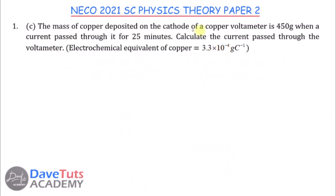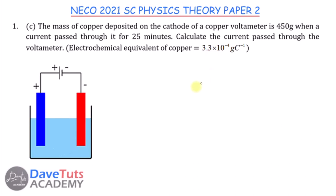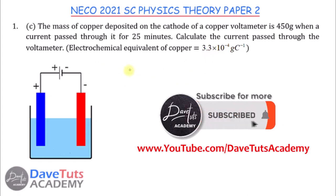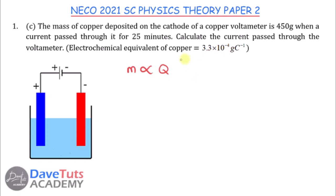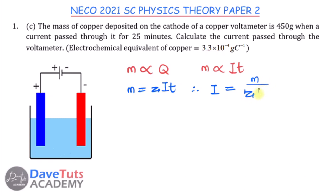Here, we are told that the mass of copper deposited on the cathode of a copper voltameter is 450 grams when current passes through it for 25 minutes. We must calculate the current passed through the voltameter, given the electrochemical equivalent of copper as 3.33 × 10⁻⁴ grams per coulomb. Using Faraday's law of electrolysis, mass is proportional to the quantity of electricity passed, so m = ZIT, meaning current I = m ÷ (Z × T).